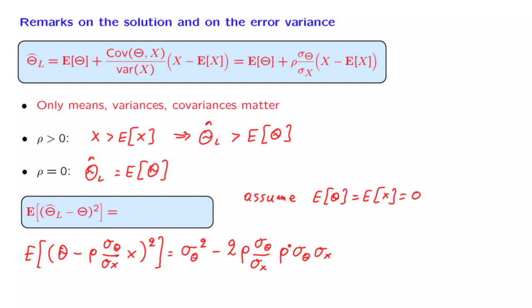And finally, we have a last term, which is rho squared sigma theta squared divided by sigma x squared times x squared. We have an expected value. So that's the expected value of x squared, which is just the variance of x or sigma x squared.